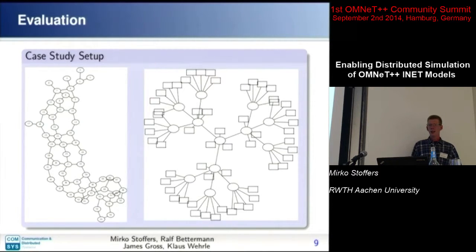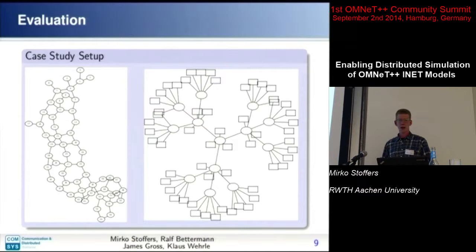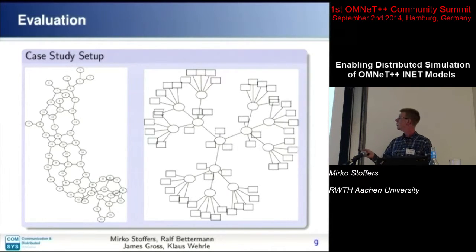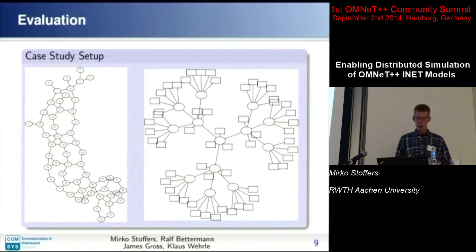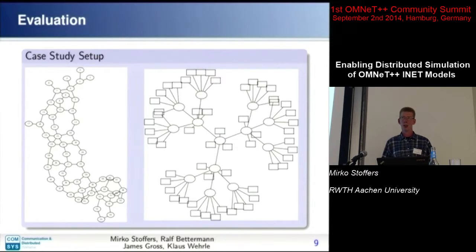For evaluation, we used a case study based on an OMNeT example: the NTT backbone scenario. We wanted a large-scale network, so we took this scenario as a backbone and connected to each backbone router a corporate or campus local network. In the end we had a network of approximately 5,000 nodes.